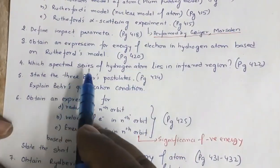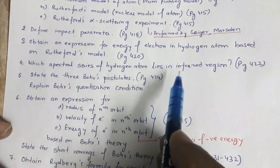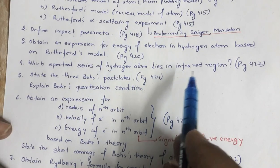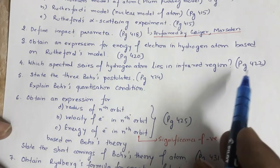Next is which spectral series of hydrogen atom lies in the infrared region. Similarly they may ask you which series lies in ultraviolet region. So this is given in page number 422.